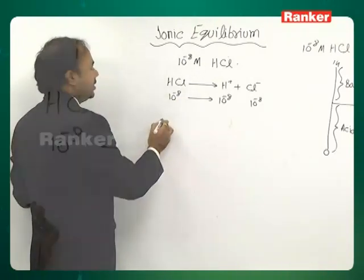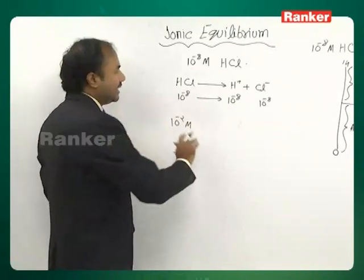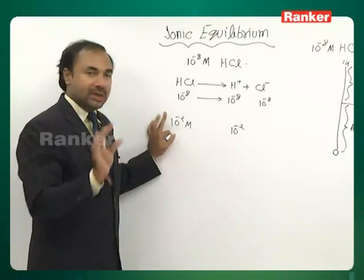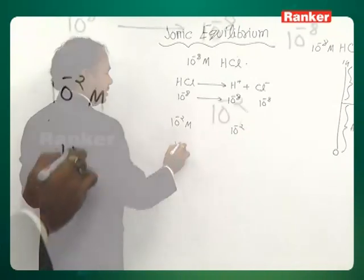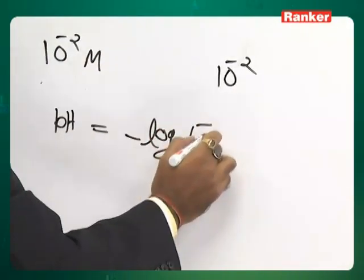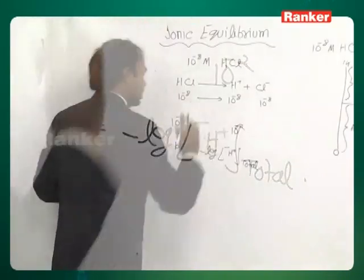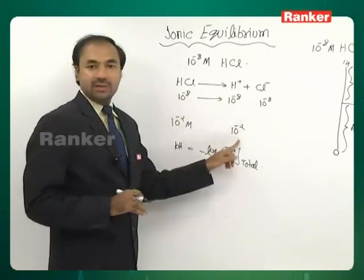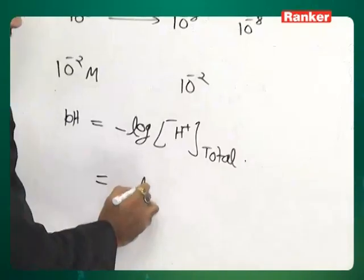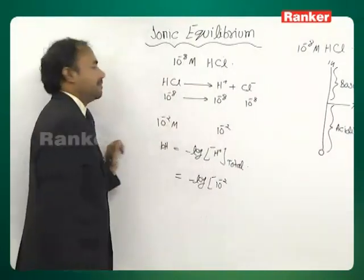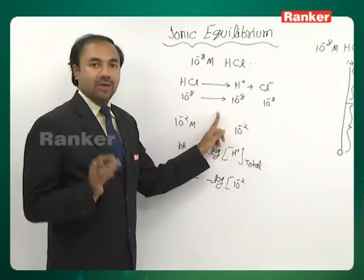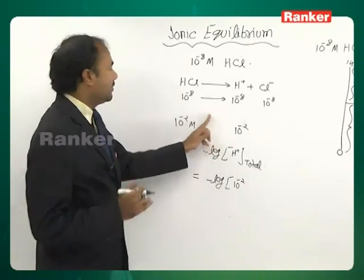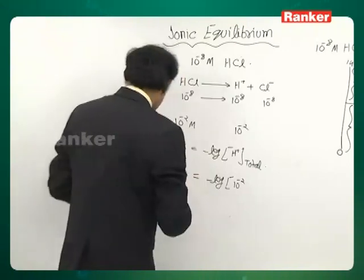For the 10⁻² M HCl case, the H⁺ from dissociation of HCl was 10⁻² mol/L. Recall from the beginning that the formula is pH = -log of total H⁺ ion concentration in the solution. There is one more species contributing H⁺ to the solution — water itself. Water also dissociates to give H⁺ and OH⁻.